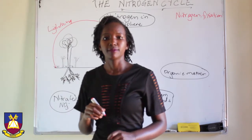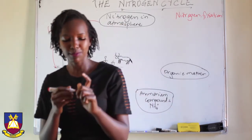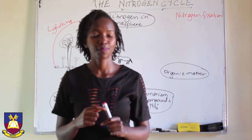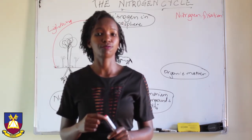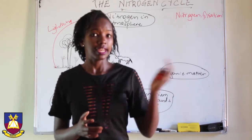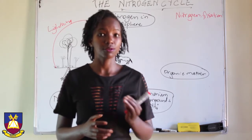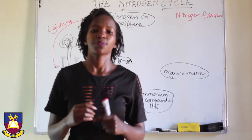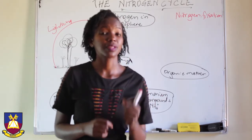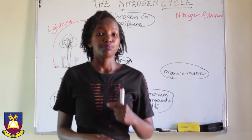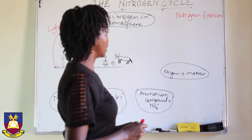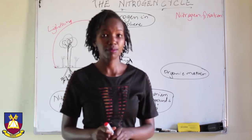You also have certain types of plants that have bacteria. Those bacteria have the capacity of changing nitrogen into nitrates, because nitrates are usable by plants. This bacteria converts atmospheric nitrogen or nitrogen in the soil and makes it into nitrates. This is also what we call nitrogen fixation, and the name of this bacteria is nitrogen-fixing bacteria.